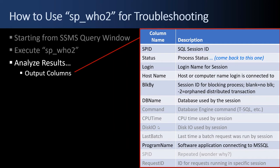CPU time and disk I/O time — I typically don't look at those; that's the total time since the session was opened. The last batch column shows the last time a batch request was run by a session — I usually don't look at that, but you could. Program name is very important — I look at that a lot. It's the software application running the given session on the given host name. And there's the session ID repeated again, and a request ID which I don't really use.